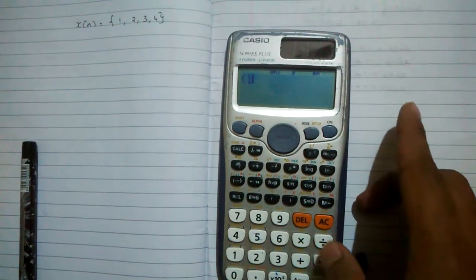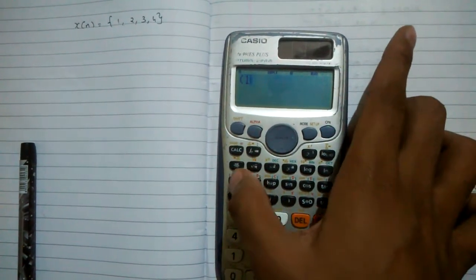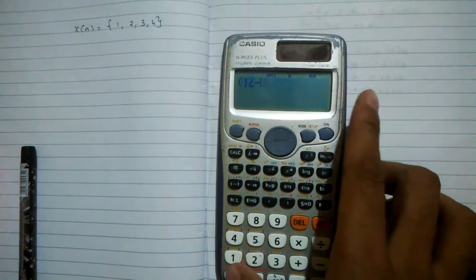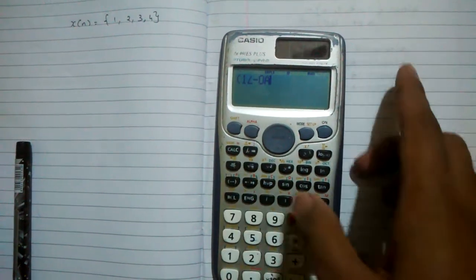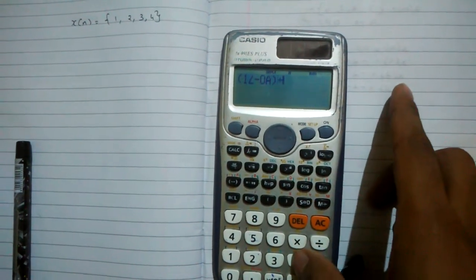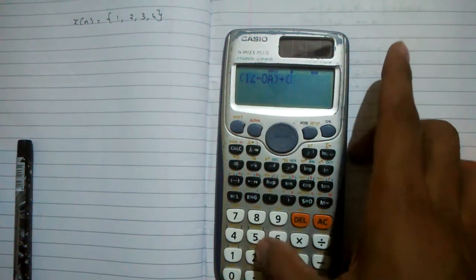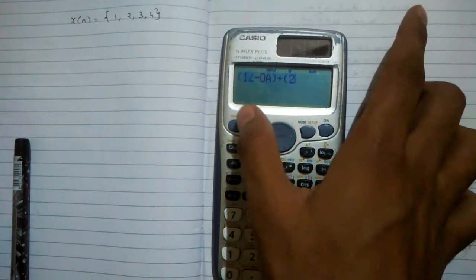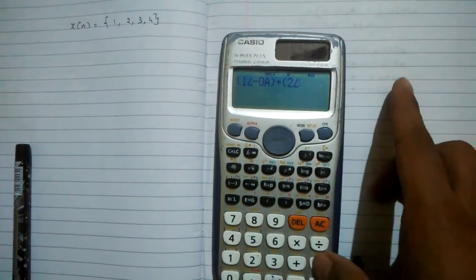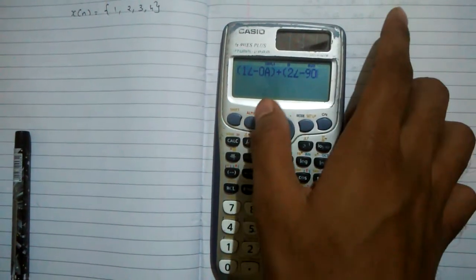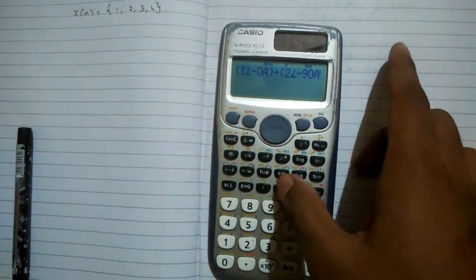Open bracket 1 shift angle minus 0 alpha A and close bracket, then plus open bracket then 2 shift angle minus 90 alpha A and close bracket.